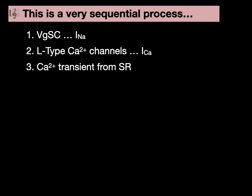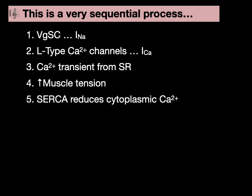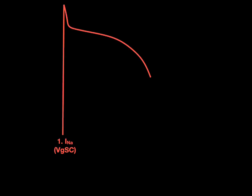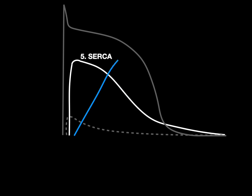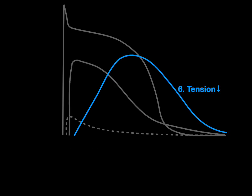So this is a very sequential process. Voltage-gated sodium channels open. The sodium current causes the L-type calcium channels to open. You get the calcium current. That binds to the ryanodine receptors, and you get the calcium transient from the SR. You increase muscle tension, but then SERCA reduces cytoplasmic calcium, and the muscle tension goes down. First, the voltage-gated sodium channel through the sodium current causes the calcium current, causes the calcium transient, causes an increase in muscle tension, and then SERCA brings down the cytoplasmic calcium, and the muscle tension goes down.